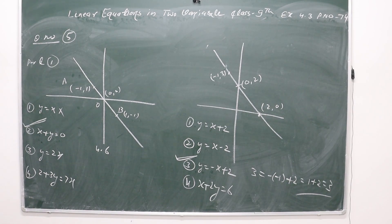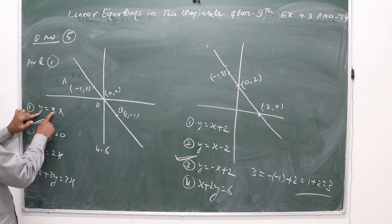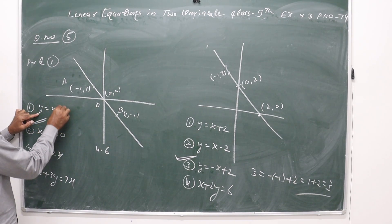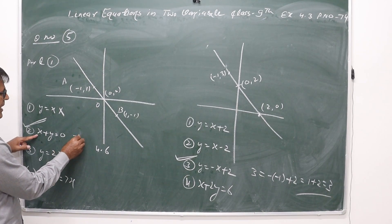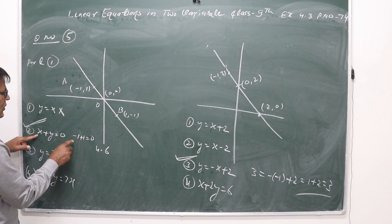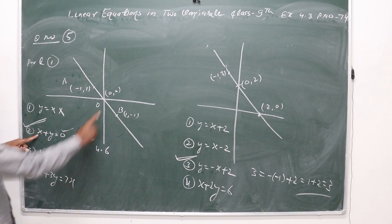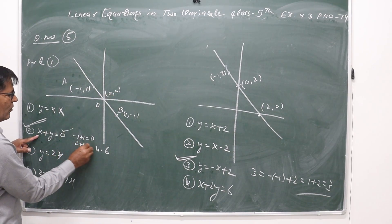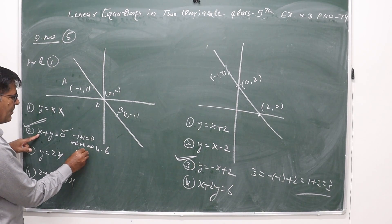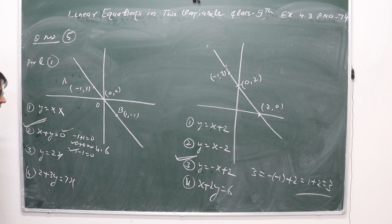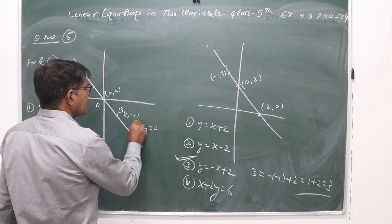To find the correct answer, we will put the points one by one into the given options. The option which is satisfied by all three points will be the correct answer. Taking the first point: x = -1 and y = +1. Checking option one: 1 is not equal to -1, so this option is cancelled. In option two, putting x = -1 and y = +1 gives 0 - 1 + 1 = 0, which is satisfied. Putting x = 0 gives 0 + 0 = 0, also satisfied. So the correct option is x + y = 0. This line is represented by x + y = 0, and the correct option is second.